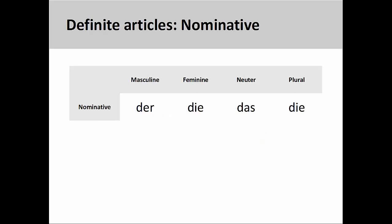Most of the definite articles we have seen up to this point are in the nominative case. They mark the noun that follows as being the subject or primary actor of a sentence. You could think of these definite articles as being the first row of a chart.